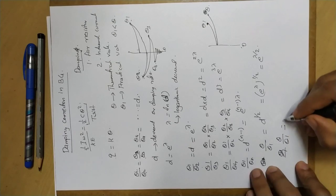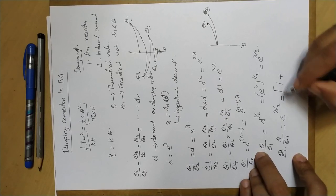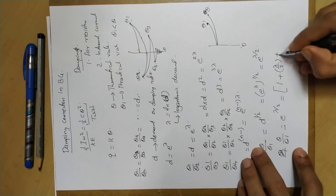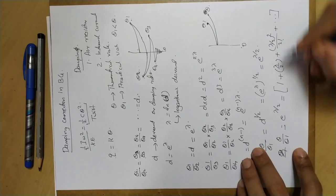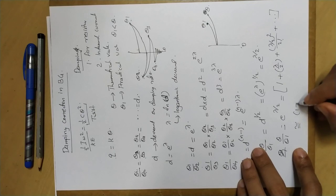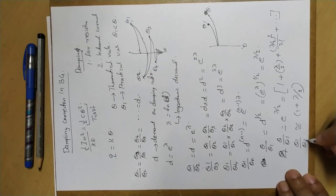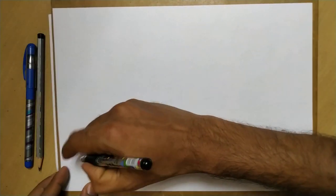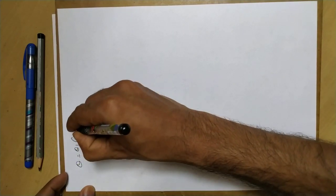Theta by theta1 equals e raised to lambda by 2. Expanding using the Taylor series, e raised to x equals 1 plus x plus x squared over 2 factorial plus higher order terms, where x equals lambda by 2. Keeping only the first-order term, theta by theta1 is approximately 1 plus lambda by 2. Therefore, theta equals theta1 times (1 plus lambda by 2).